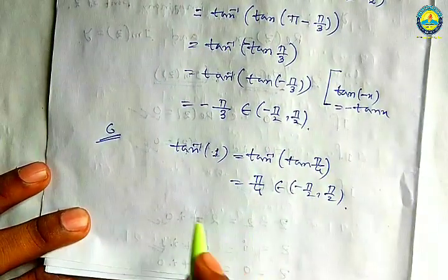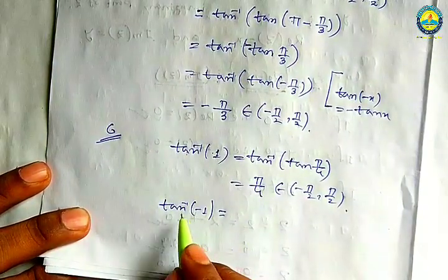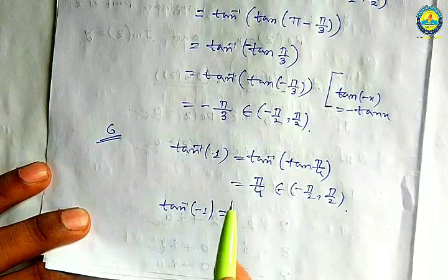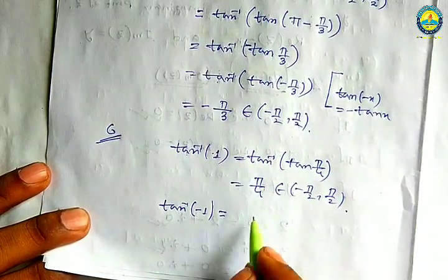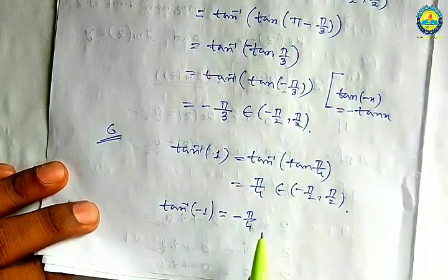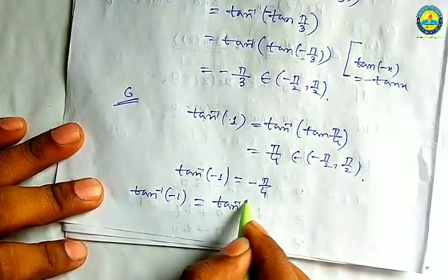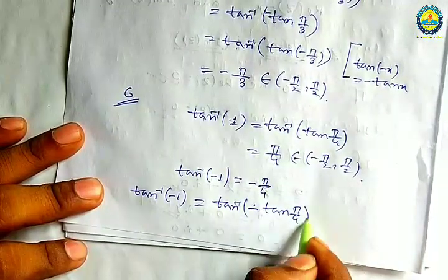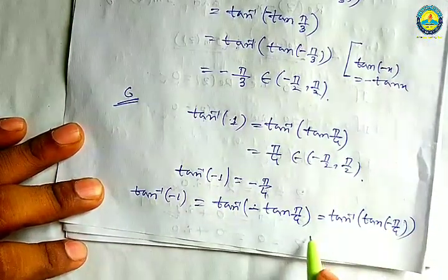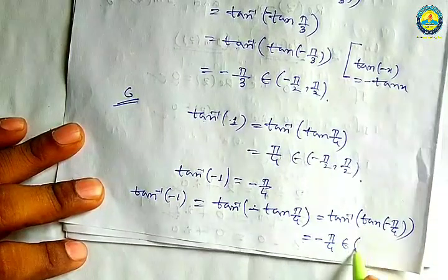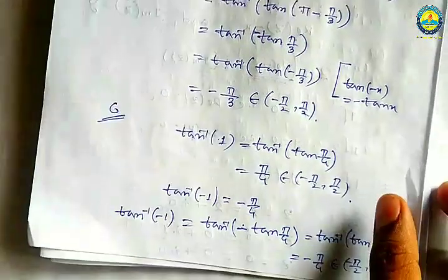Then you will see the value of tan inverse minus 1. You can find that tan(minus pi by 4) equals minus 1. So tan inverse(minus 1) = minus pi by 4. The range is minus pi/2 to plus pi/2, so tan inverse(minus 1) = minus pi by 4.